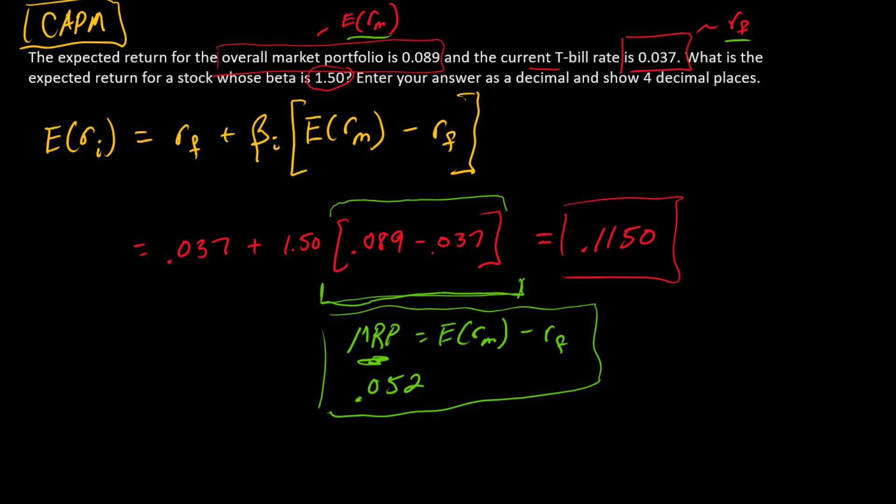Other things that you might need to do here is just use algebra and solve for something different. For example, I could give you this, this, this, and this, and ask you to solve for beta. So can you solve this algebraically for beta? You should be able to. So what is beta here? Beta is the stock's expected return minus the risk-free rate in the numerator and the market risk premium in the denominator. So that's just a simple algebra question.